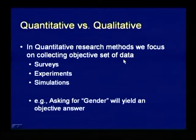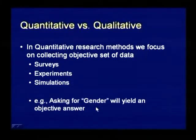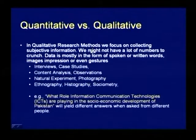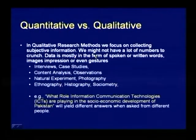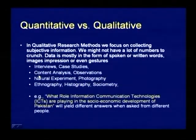In quantitative research methods, we employ different types of research methods — for example, surveys, experiments, and simulations — and we want objective data. For example, if we ask someone for gender, it will yield an objective answer. In qualitative research methods, we focus on collecting subjective information. We might not have a lot of numbers to crunch, and data is mostly in the form of spoken or written words, images, impressions, or even gestures.